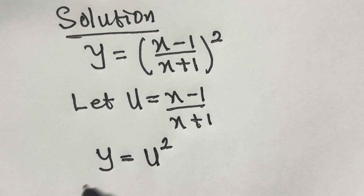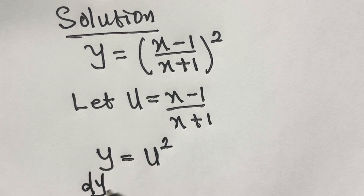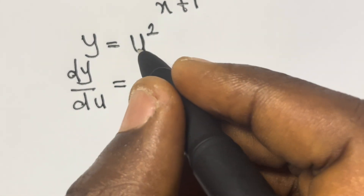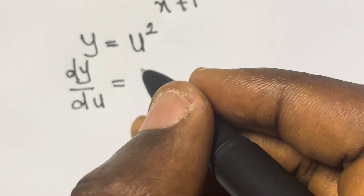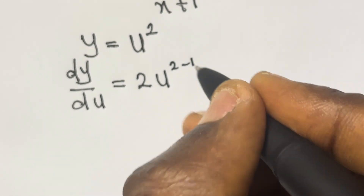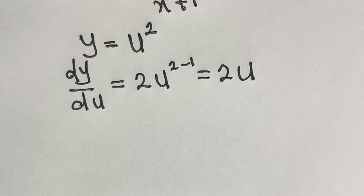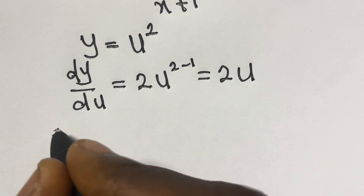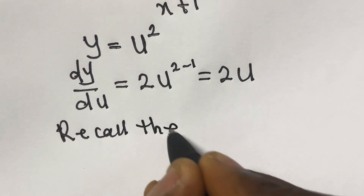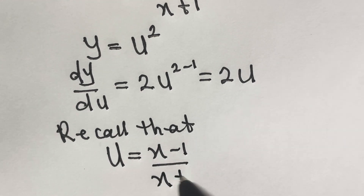We have to differentiate y equals u squared. Differentiating first with respect to u, dy/du equals 2u to the power 1, which is 2u, from differential calculus. Remember that u equals x minus 1 divided by x plus 1.